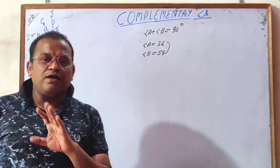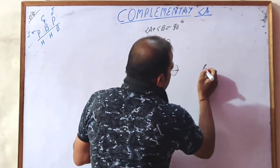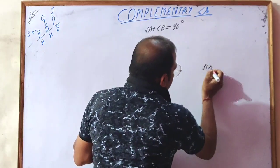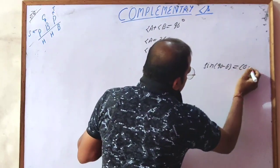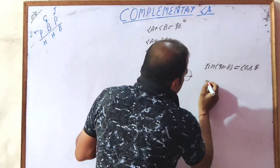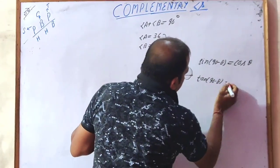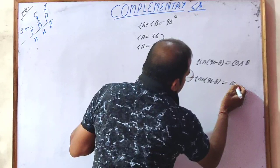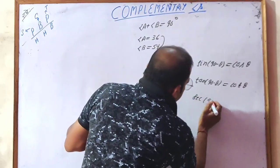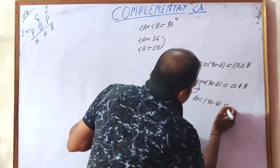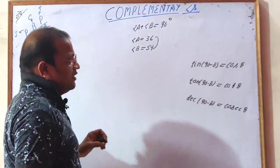In this chapter, there are 3 ratios which we have to learn. The first is: sine(90 minus theta) is equal to cos theta. The second is: tan(90 minus theta) is equal to cot theta. And the third is: sec(90 minus theta) is equal to cosec theta.